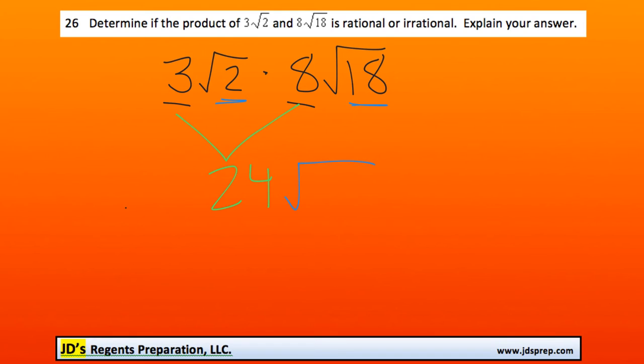They would still be inside a square root, so 2 times 18 is 36. And you'll notice, conveniently, that we can square root 36. So this is the same thing as 24 times 6, which would get us 144.